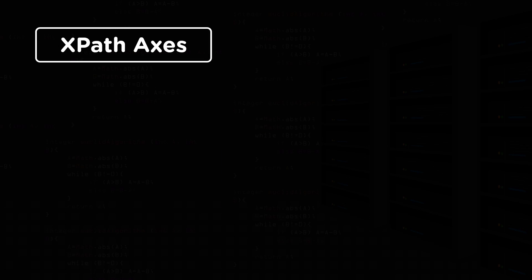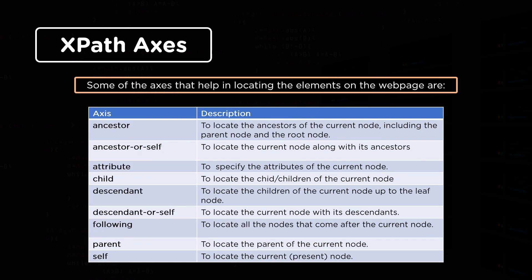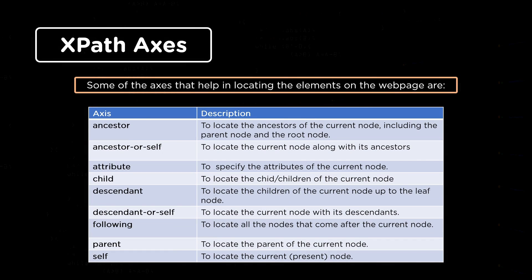Let's look at some axes that help in locating elements on the web page. The ancestor axis selects all ancestor elements of the current node. The ancestor-or-self axis locates the current node along with its ancestors. The attribute axis specifies the attributes of the current node. The child axis selects all children elements of the current node. The descendant axis locates the children of the current node down to the leaf node. The descendant-or-self axis locates the current node with its descendants. The following axis locates all nodes that come after the current node. The parent axis locates the parent of the current node. The self axis locates the current or present node.